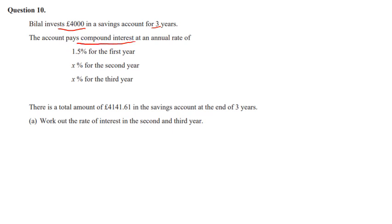Because of that, what that means is it's going to get paid 1.5% of £4,000. And after that, it's going to get paid a new percentage of that amount and then a new percentage of this amount. So to start with, what I would do is work out how much money there is in the account at the end of the first year.